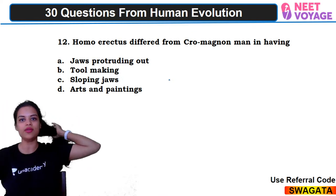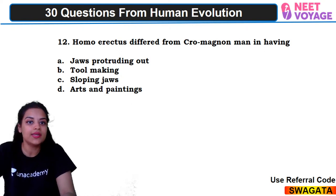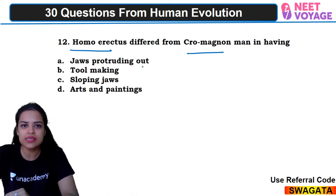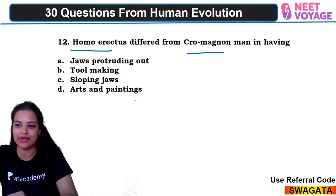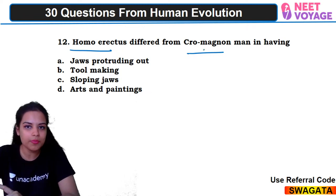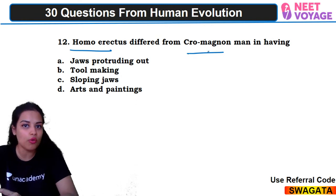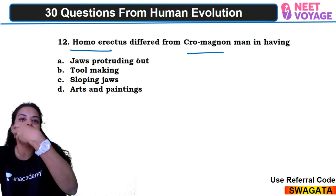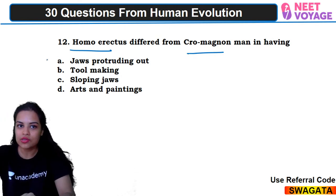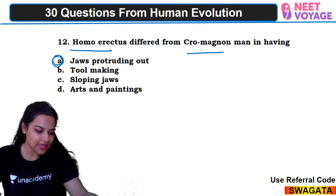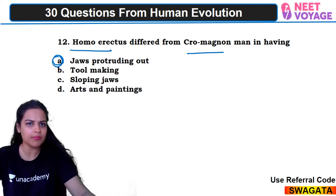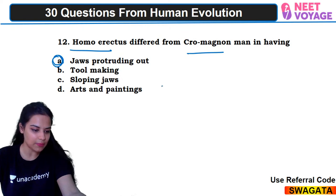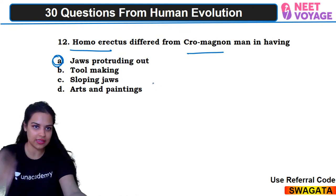Twelfth question: Homo erectus differed from Cro-Magnon man in having what? Art paintings were Cro-Magnon man's feature. Sloping jaws were also Cro-Magnon man's feature. Tool making was started by homo habilis. Homo erectus had jaws protruding outward — a somewhat heavyweight jaw. So A would be the right answer. Tau Keer and Ram Prasad answered correctly.